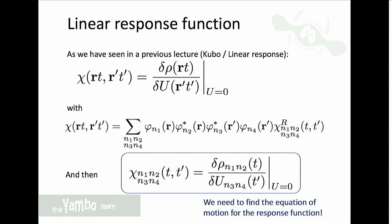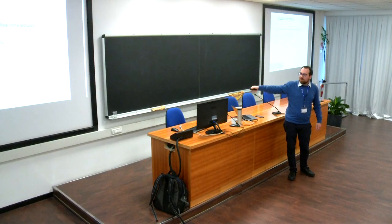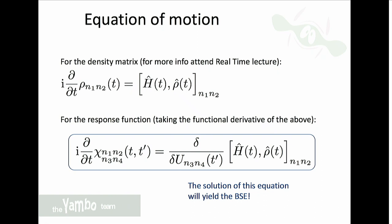In order to proceed we introduce the equation of motion for the density matrix: its time evolution is given by the commutator with the Hamiltonian. You will hear more about this tomorrow in the real-time lectures, where the more general Kadanoff-Baym equation is discussed. For us this reduced version is the perfect starting point in linear response to arrive at the Bethe-Salpeter equation, because if we apply a functional derivative with respect to the incoming external field this becomes an equation of motion for the response function.